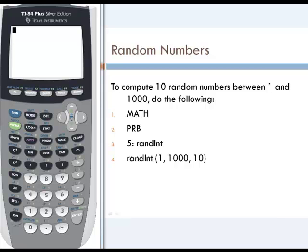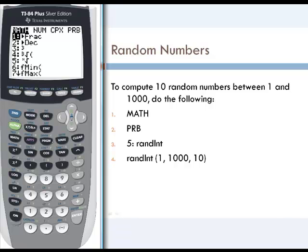We're going to use our TI-84 calculator to help us find random numbers. To do that, we'll go under the MATH function just below alpha, and then we'll scroll to the right to PRB for probability.